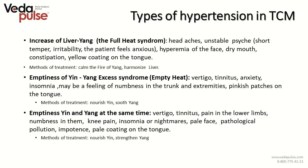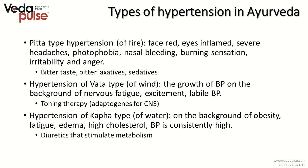Another type is emptiness of both Yin and Yang simultaneously. It causes vertigo, tinnitus, pain and numbness in the lower limbs, knee pain, insomnia or nightmares, pale face, pathological pollution, impotence, and pale coating on the tongue. Methods of treatment are to nourish Yin and strengthen Yang.